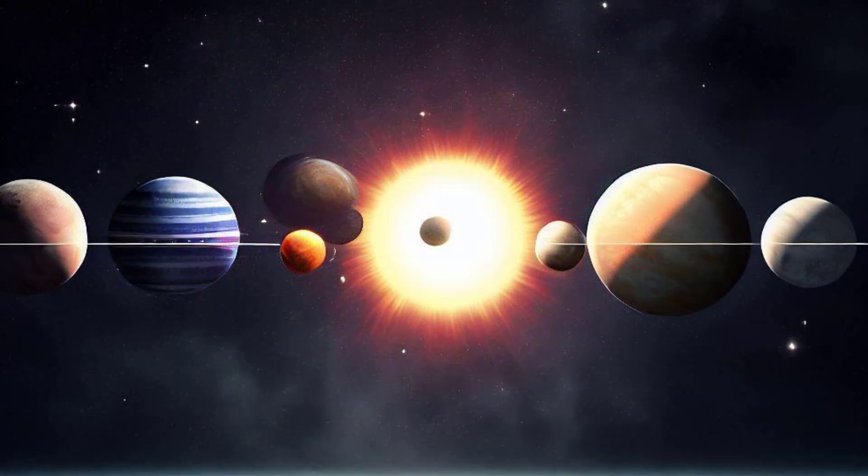The planets are arranged in their order from the Sun, based on their distance and size. The first four planets—Mercury, Venus, Earth, and Mars—are called terrestrial planets because they have solid surfaces made of rock and metal. The next four planets—Jupiter, Saturn, Uranus, and Neptune—are called gas giants because they have thick atmospheres made mostly of hydrogen and helium.